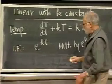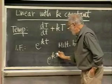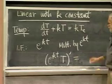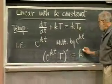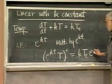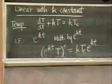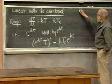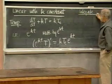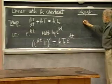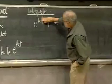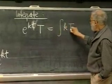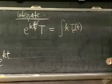The integrating factor: P is the constant k, so the integral of k·dt is kt, and exponentiating gives e to the kt. Multiply both sides by e to the kt. In compact form, the left-hand side becomes the derivative of [e^(kt)·T] with respect to t. The right-hand side becomes k·T_e(t)·e^(kt). Now integrate both sides.